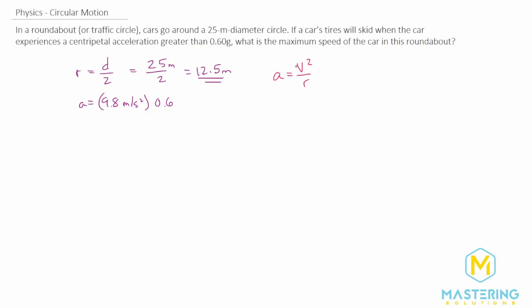So if we multiply both sides of the equation by r, that will simplify so v squared is equal to the radius times the acceleration. Take the square root of both sides. Now we have the velocity is equal to the square root of the acceleration times the radius.